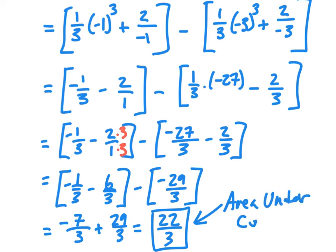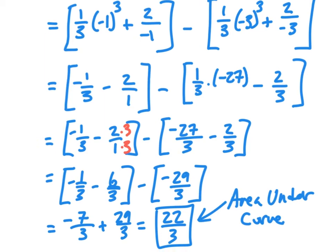There are a number of ways to go about this — you could distribute the negative first, then find common denominators. I'm just doing it the way I see it. This is something you have to practice and verify you're doing correctly, and it takes time to build that confidence.